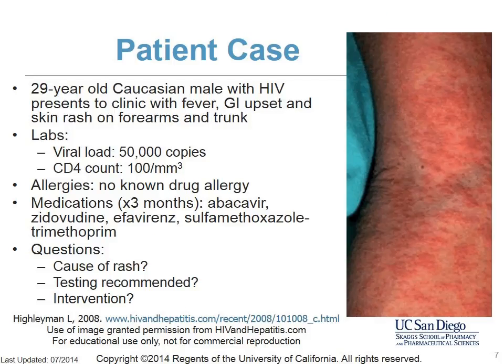We'll start with the case of a 29-year-old Caucasian male with HIV. He presents with fever, gastrointestinal upset, and skin rash on his forearms and trunk. His labs revealed a viral load of 50,000 copies and a CD4 count of 100. He has no known drug allergies. For three months, he has been taking abacavir, zidovudine, efavirenz, and Septra. The photo shows the patient's arm with a rash that is raised and red.